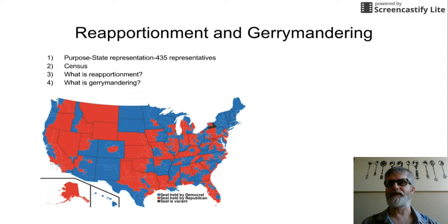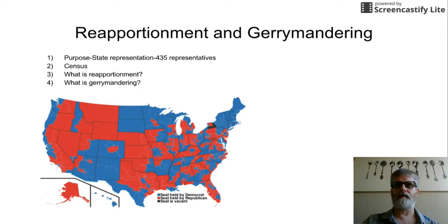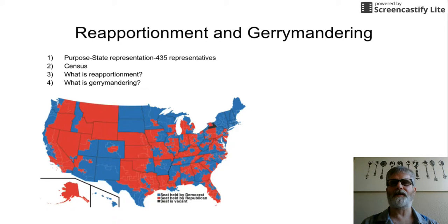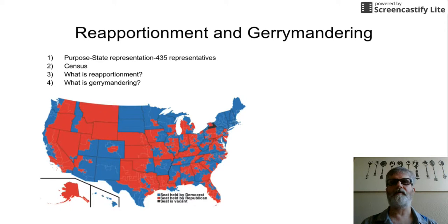Gerrymandering means making a weird-shaped district — not a square or triangle, but a real strange shape. It could be a line, a circle, all different shapes, and you can see some of those. We'll actually play a redistricting game in class that demonstrates this. Gerrymandering has a bad connotation because it's done for political reasons — it's why we often see the same Democrat or Republican coming from the same district.